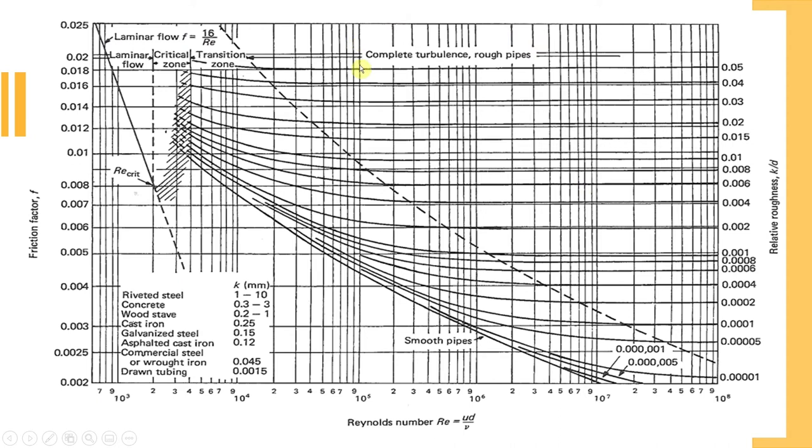We also have rough pipes zone. In this zone, friction factor only depends on relative roughness, and it does not depend on Reynolds number, because you can see all the lines are parallel to x-axis. So friction factor in this region depends only on relative roughness. On the right-hand side of this dashed line, friction factor depends only on relative roughness. And it's only within this transition zone, friction factor depends on both, on Reynolds number and relative roughness.